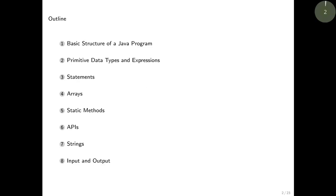Hi, welcome to this lecture on programming model. This is the first part of our two-part introduction to the Java programming language. Here is an outline for this lecture. We'll first talk about the basic structure of a Java program, then discuss primitive data types and expressions, different statement forms such as if and for statements, arrays, static methods, the concept of an API, strings in Java, and finally different forms of input and output.